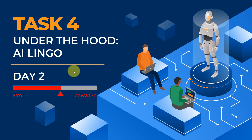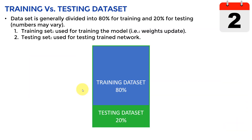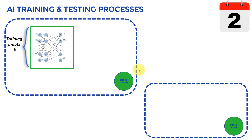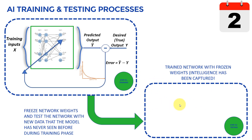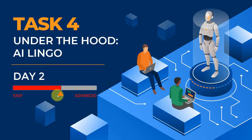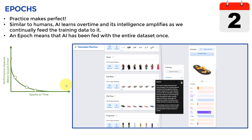Hello everyone and welcome to task number four. In this task we are going to cover key AI terminologies and explore what is actually going on under the hood. If you remember in the previous task we learned about the difference between model training and testing — the process of training an AI model and then testing it on a new dataset the model has never seen before. Today's task is going to be at the intermediate level, so I'll try to make it as easy as possible. Let's go ahead and cover the first definition.